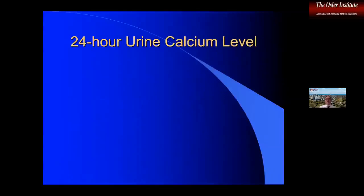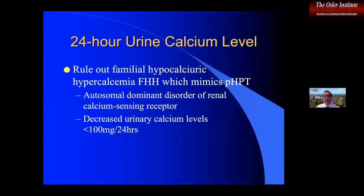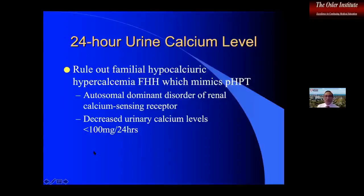Your fifth test of the five tests is 24-hour urine calcium levels. What are you ruling out? You're ruling out familial hypocalciuric hypercalcemia — FHH — an autosomal dominant disorder of the renal calcium sensing receptor. In the 24-hour urine you'll see decreased urine calcium levels, less than 100 milligrams in 24 hours, which supports FHH. I will review all five of these tests for my patients. If decreased urine calcium is found, we move away from surgery and consider that this is indeed an FHH condition.